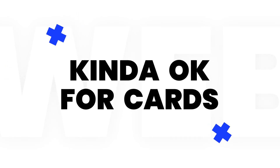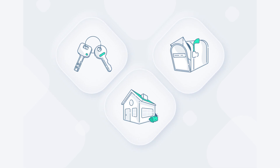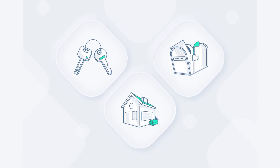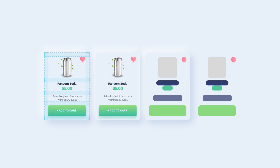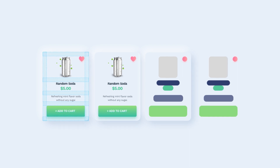Cards and sliders are probably the best use cases for neumorphism. However, there are a number of conditions for it to work. The structure of the card must be done right — the element hierarchy needs to be clear and the spacing well defined. The best way to test if the card works is by removing the neumorphic background; if it works on its own, especially next to other cards, it's good.